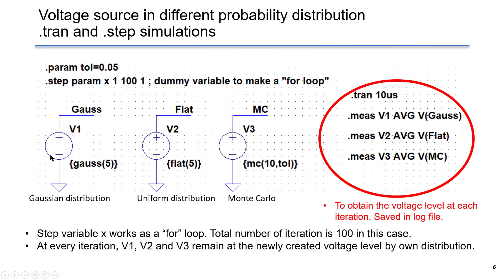At every iteration, V1, V2, and V3 remain at the newly created voltage level by its own distribution. Again, the first one is Gaussian distribution, the second one is uniform distribution, the last one is Monte Carlo.